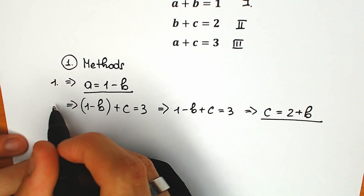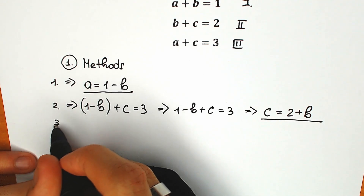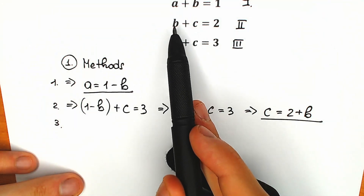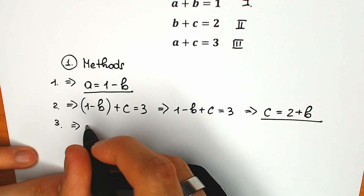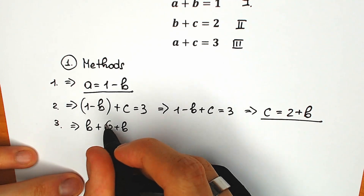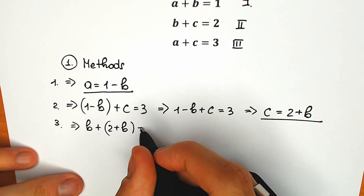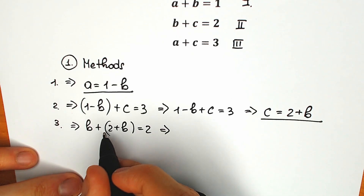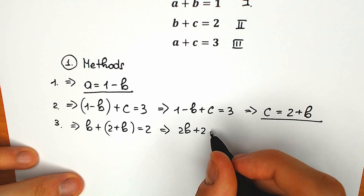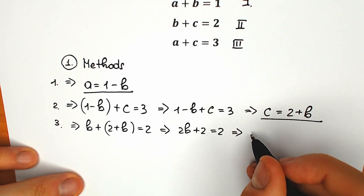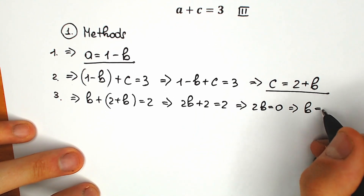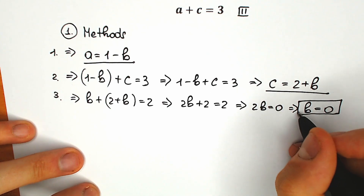That's our second step. Now in the third step, we substitute c equal to 2 plus b into equation 2. We have b plus c equal to 2, so b plus 2 plus b equal to 2, which gives us 2b plus 2 equal to 2. From here, 2b is equal to 0, so our b is equal to 0.